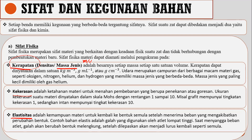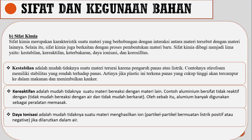Untuk sifat fisika, ada yang mau ditanyakan? Sudah jelas semua? Selanjutnya ada sifat kimia. Sifat kimia menyatakan karakteristik suatu benda berdasarkan interaksinya dengan materi lain. Sifat kimia ada tiga jenisnya: kestabilan, kereaktifan, dan daya ionisasi. Kestabilan adalah mudah tidaknya suatu materi terurai karena pengaruh panas atau listrik. Misalnya es batu yang dipanaskan akan mudah mencair — berarti tidak stabil.